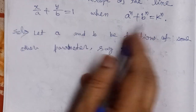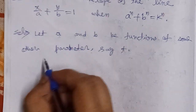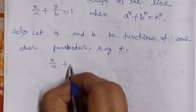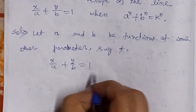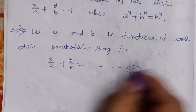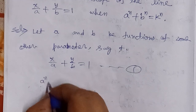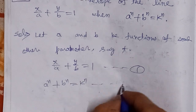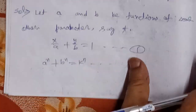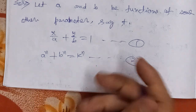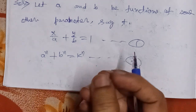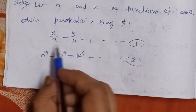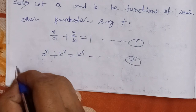Let us note the given equations. Equation 1: x/a + y/b = 1. Equation 2: a^n + b^n = k^n. Now we will differentiate both equations with respect to t, treating x and y as constants.